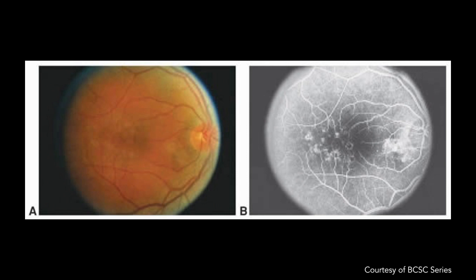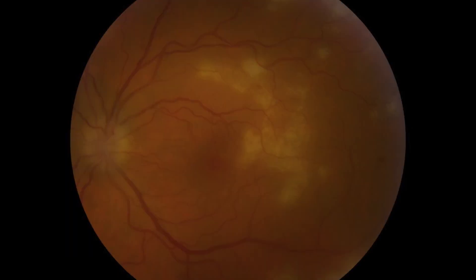Krill disease — acute retinal pigment epitheliitis. Never, ever seen it. I corresponded with somebody on YouTube who said he'd had it, and that's the only interaction I've had with anybody that's ever had it. If you look for pictures of it, it's really hard to find. These are from the book — probably some of the only photos in the whole world. No treatment usually; resolves within 6 to 12 weeks. Metamorphopsia, scotomata.